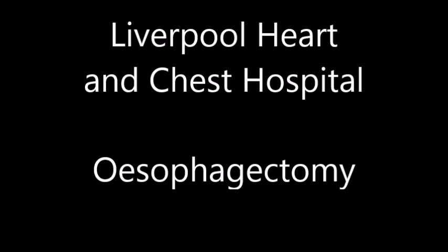What are the causes of oesophageal cancer? The body is made up of millions of different types of cells. Cancer happens when some of the cells multiply in an abnormal way, causing a growth called a tumour to form. Tumours can be benign or cancerous. Men are affected more than women and it occurs generally in older people. One type, known as adenocarcinoma, appears to be more common in people who have long-term acid reflux. Another type, squamous cell carcinoma, is more common among smokers and people who drink a lot of alcohol or have a poor diet.